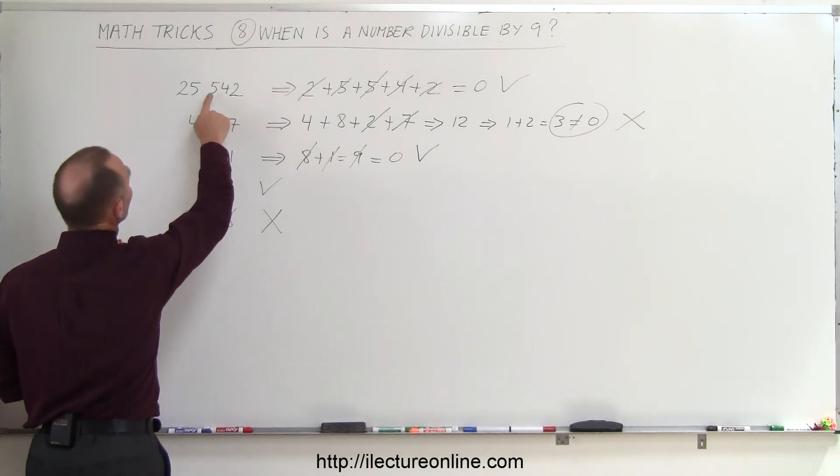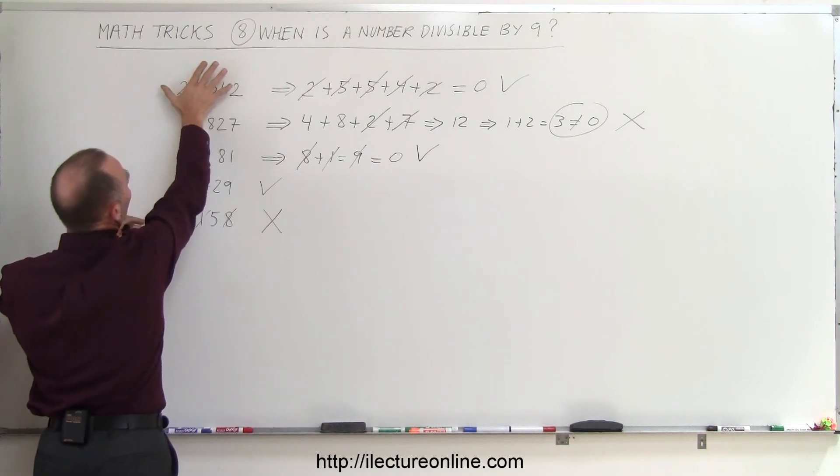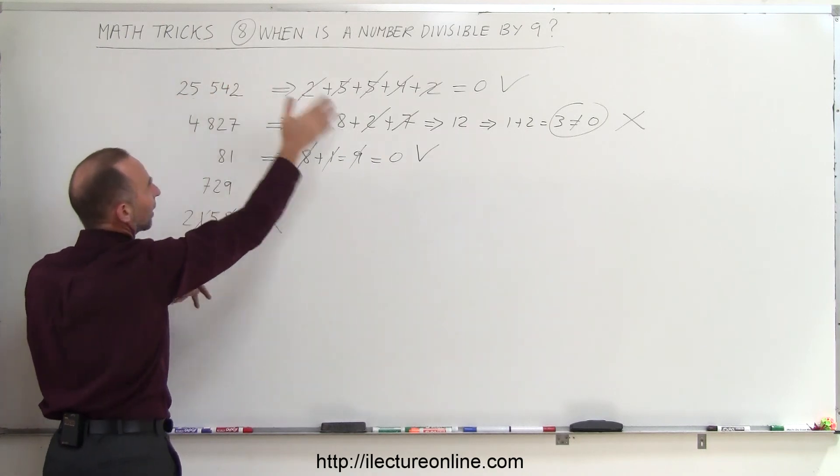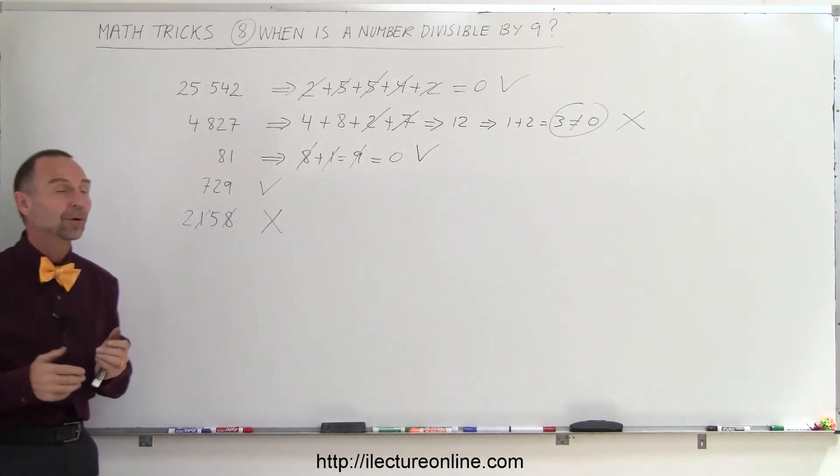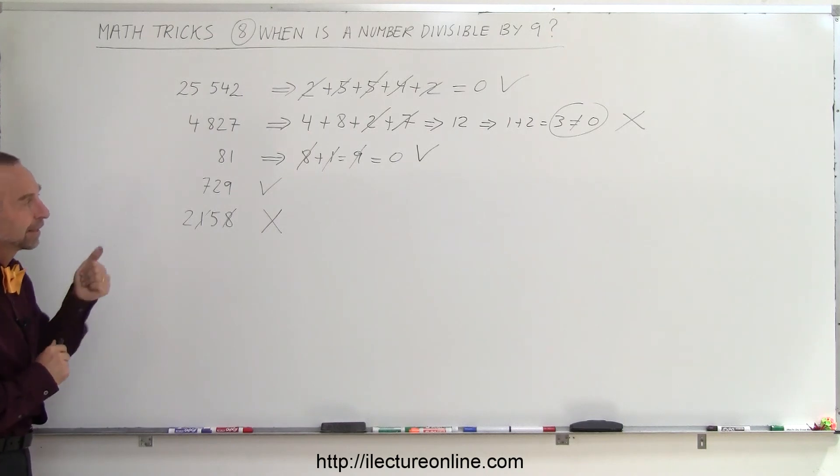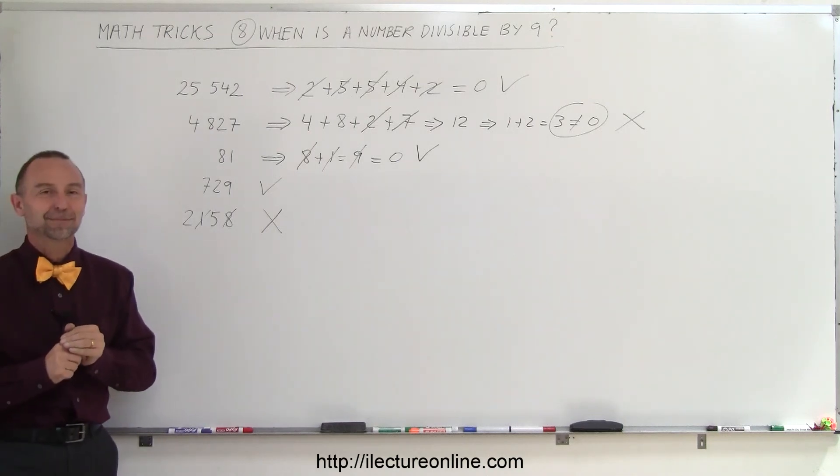Take a look here. 5 plus 4 is 9, so that goes away. 5 plus 2 plus 2 is 9. That goes away, so therefore, if I add up all the numbers, I get nothing but 9. Therefore, the whole number is divisible by 9. Nice little trick. That's how we do that. Thank you.